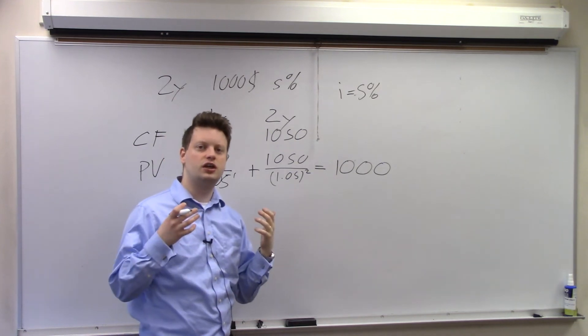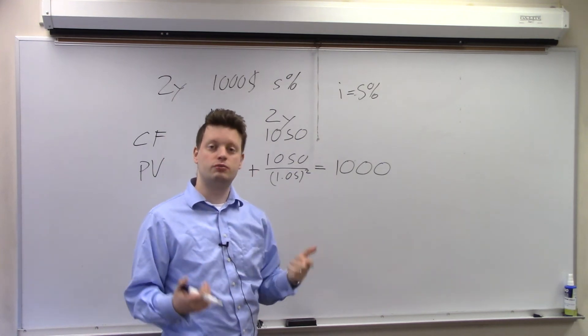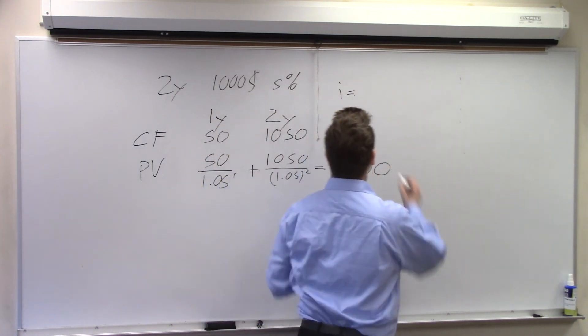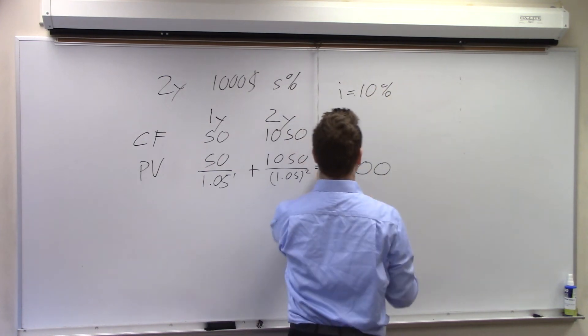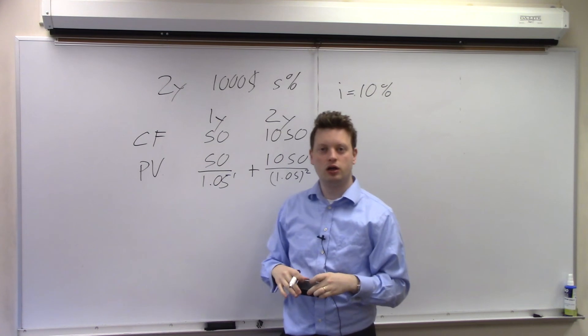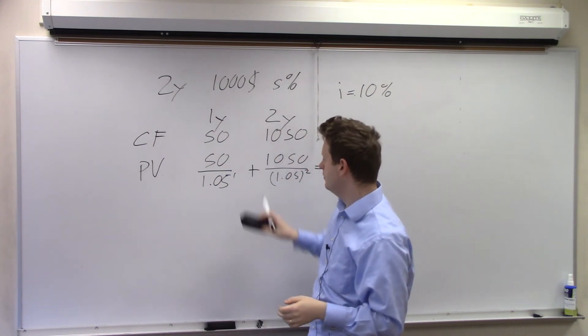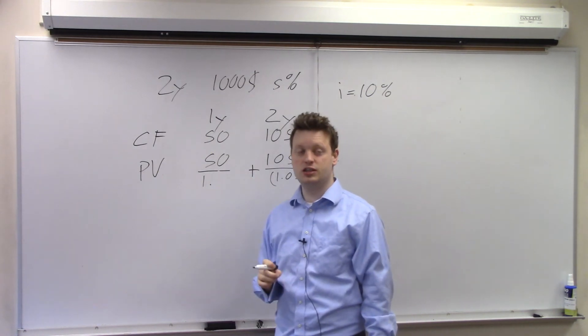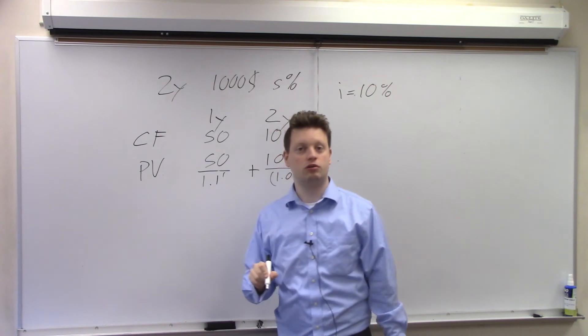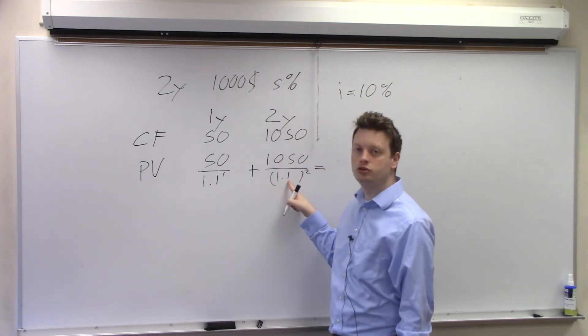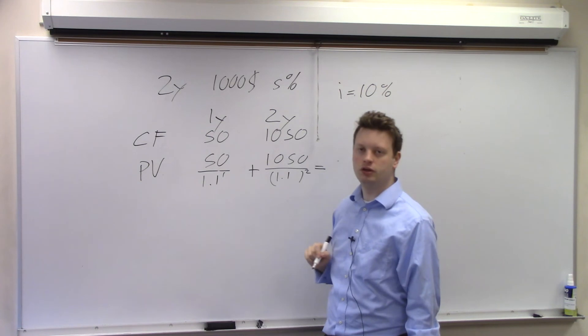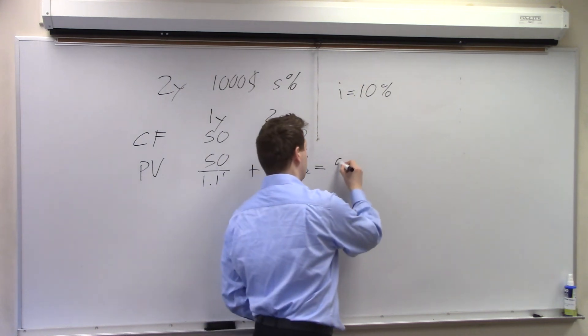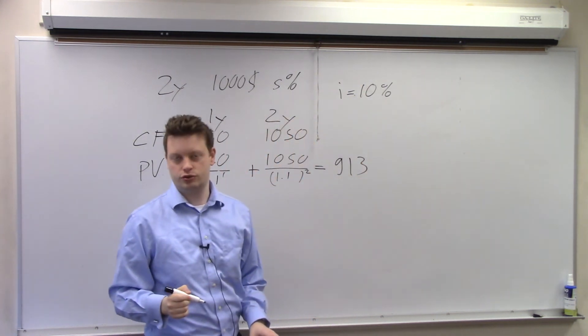Now how is that different if the interest rate was different? Let's assume the interest rate was 10%. So now we need to change all the numbers here to match it to 10%. Now the interest rate is 10% so I get 1.1 to the power of 1 and I get 1.1 to the power of 2 here because it's again only in two years. And I can use a calculator to figure out what this number is and I will get $913 approximately.